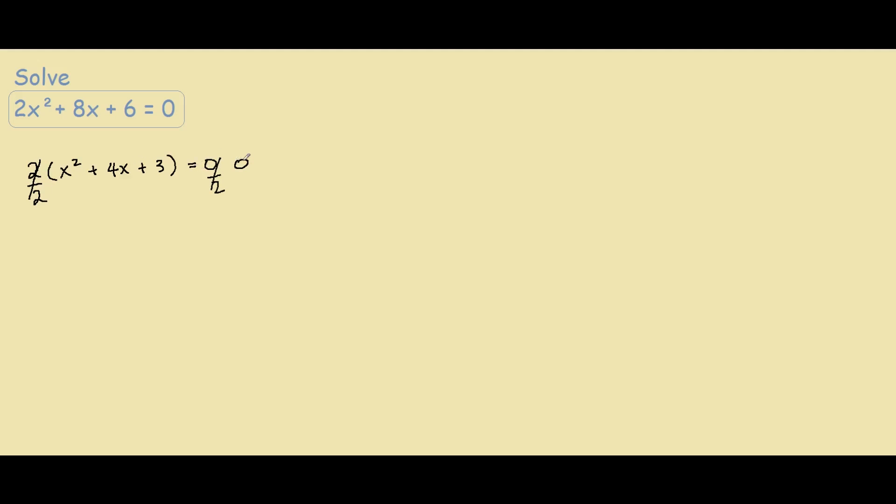So now we're left with a much more manageable equation of x squared plus 4x plus 3 equals 0.